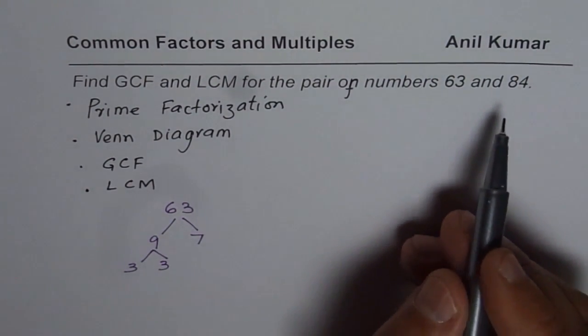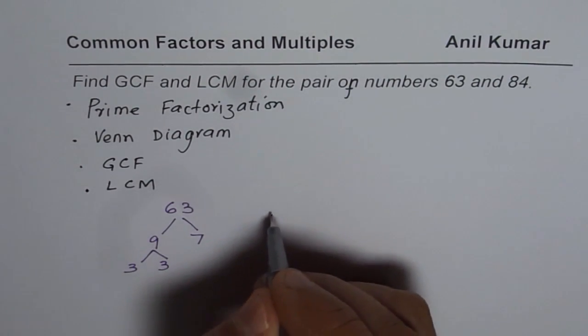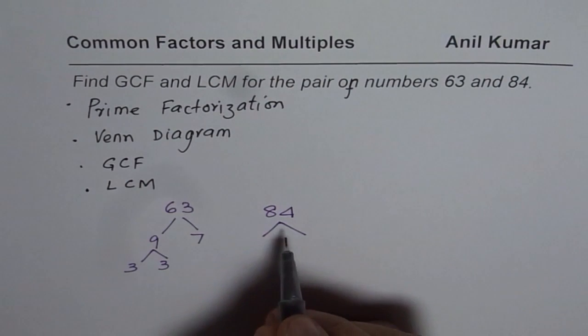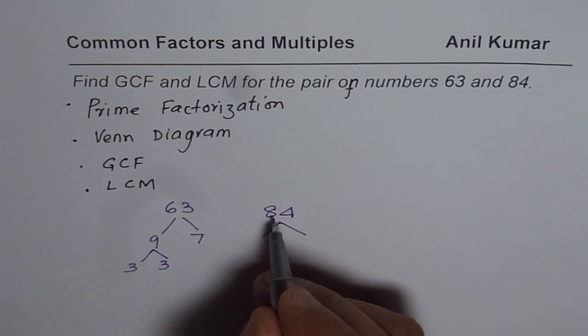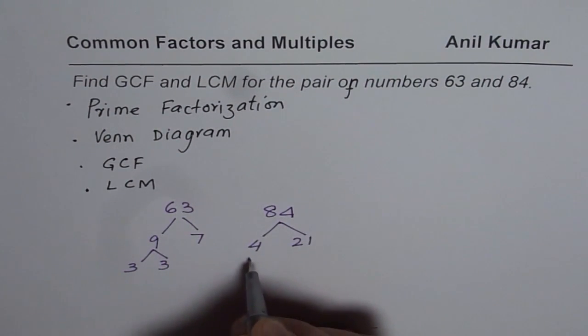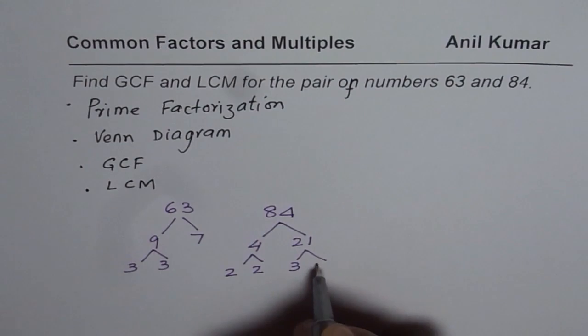Now let us find prime factorization of 84 also. So for the number 84, we could write this as, if I divide by, let's say 4, in that case we get 21. 4 can be written as 2 times 2, 21 can be written as 3 times 7.